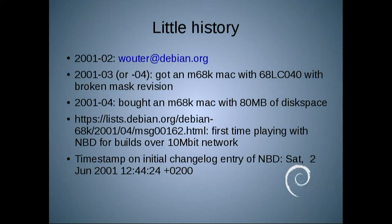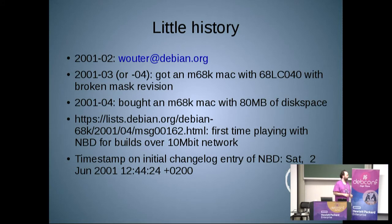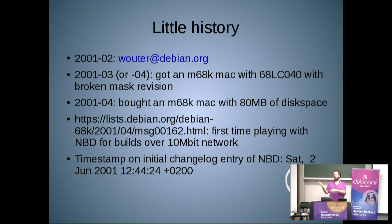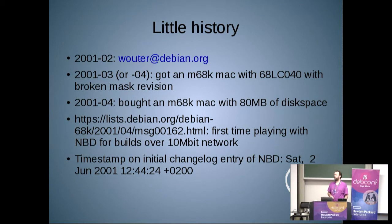I tried to build something on that machine. I did not have the disk space to build anything, so I tried doing it with NFS at first, and that failed because of other technical issues. So in April of that year, I mailed to the 68K mailing list saying, hey, I found this nice interesting thing called NBD, and with that it works because the issues we had with NFS don't apply there. I used it to do a build over a 10 megabit network and it seemed to work. And since I did this anyway, I started uploading it into Debian, and that was in June of 2001, now just over 15 years ago.